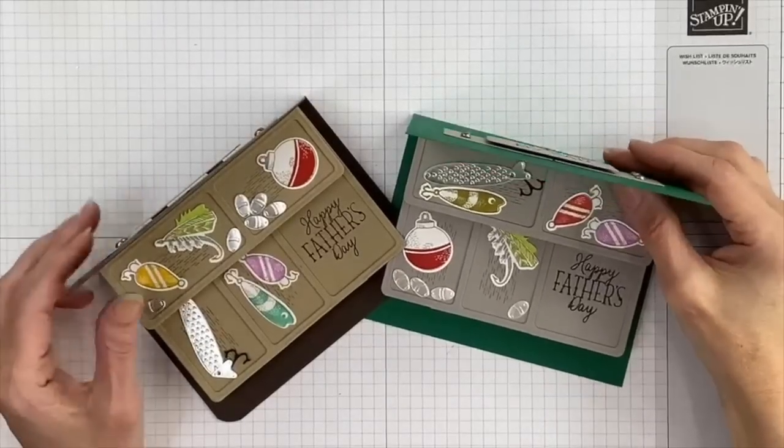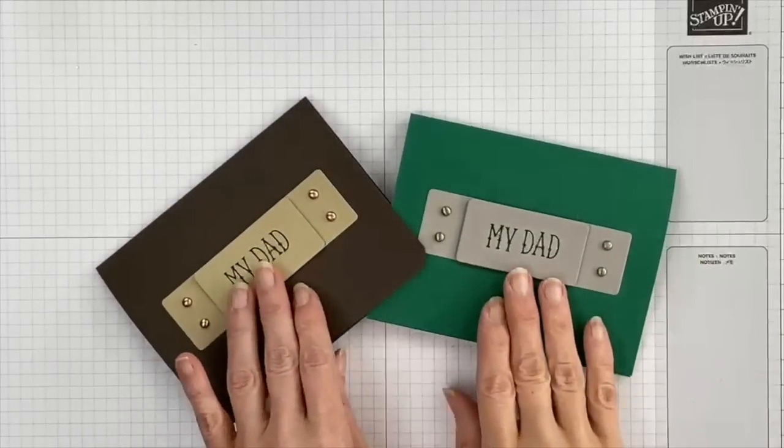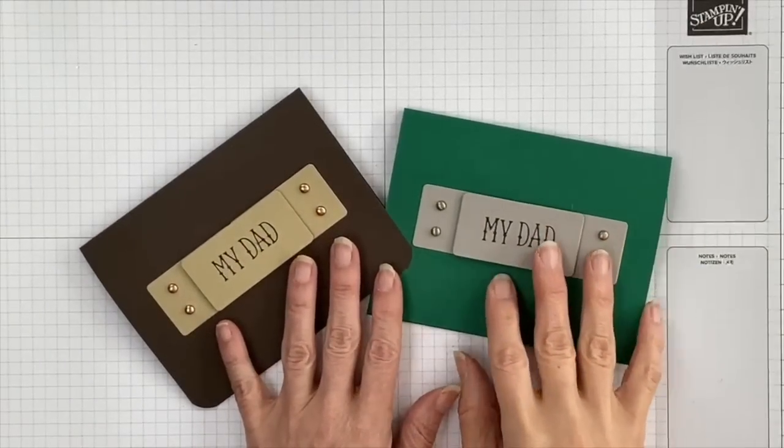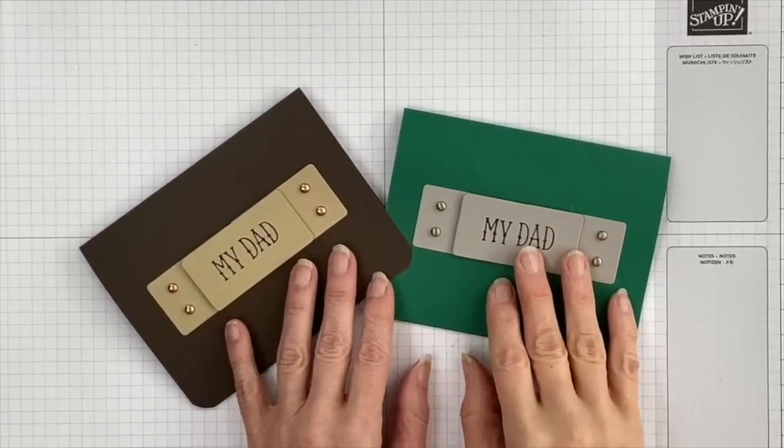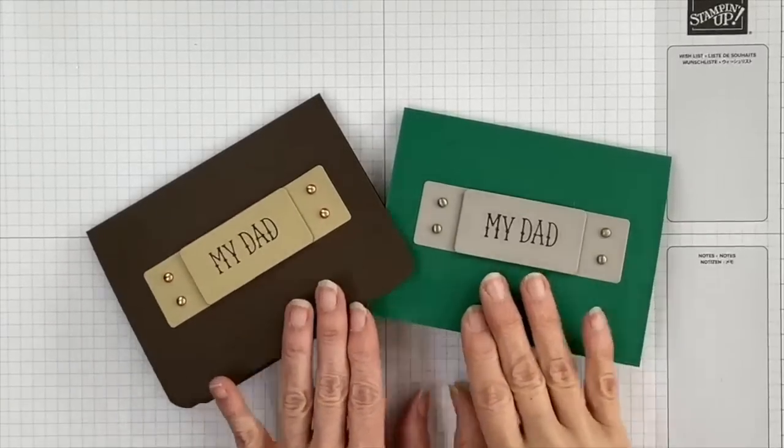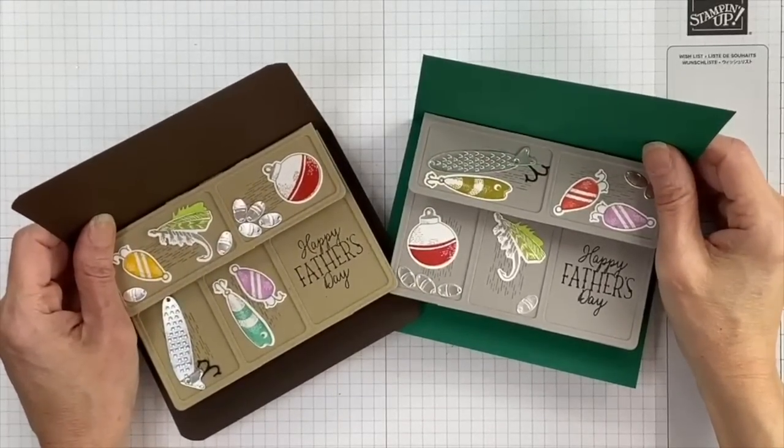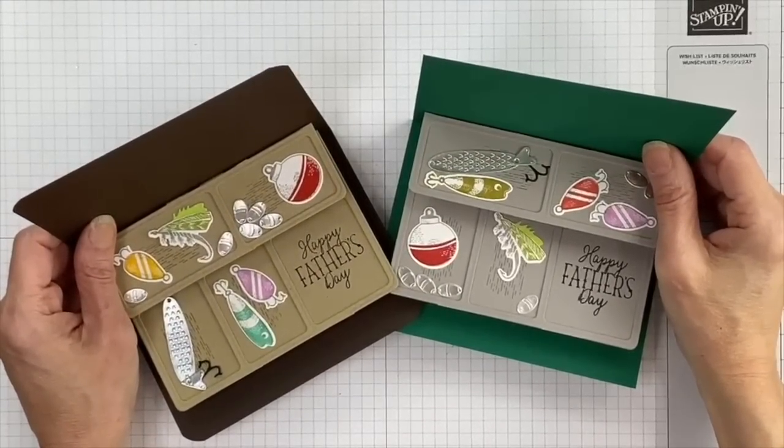You can, like I said in the beginning, you can change the colors out. You can personalize this card to make it work for whichever fisher person you are making your card for. Your dad, your grandpa, your uncle, your brother, your sister, your mom, your grandma, whoever it is that likes to fish in your family. You can create a fun card for them this way. I hope that you enjoyed what I shared today.